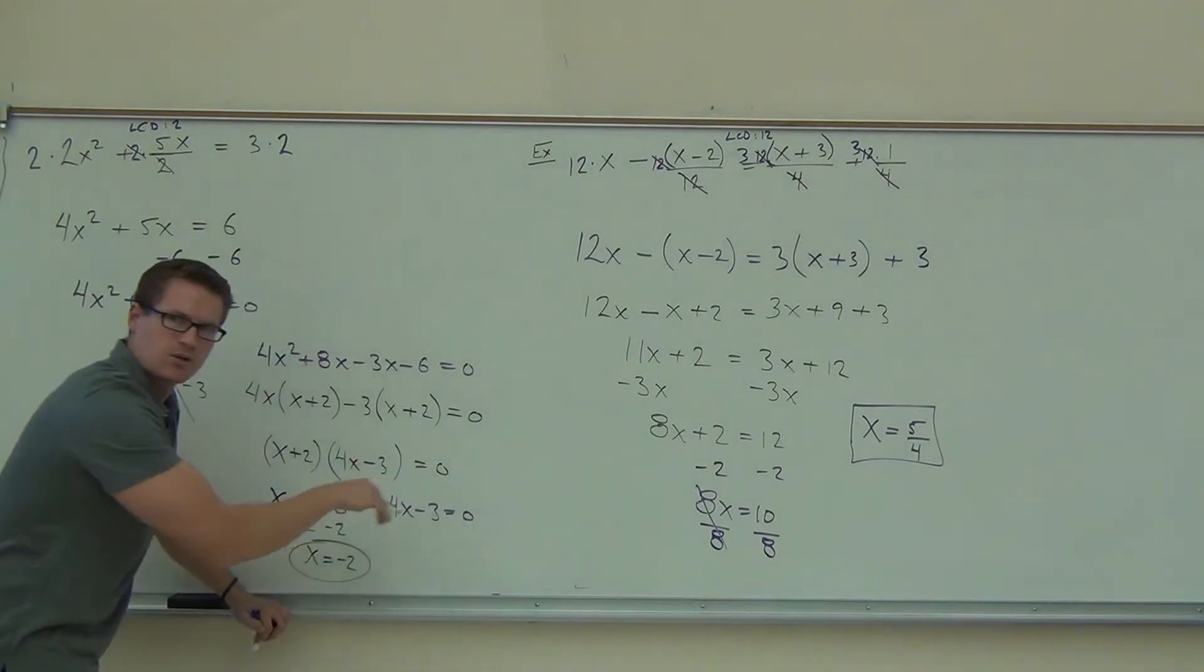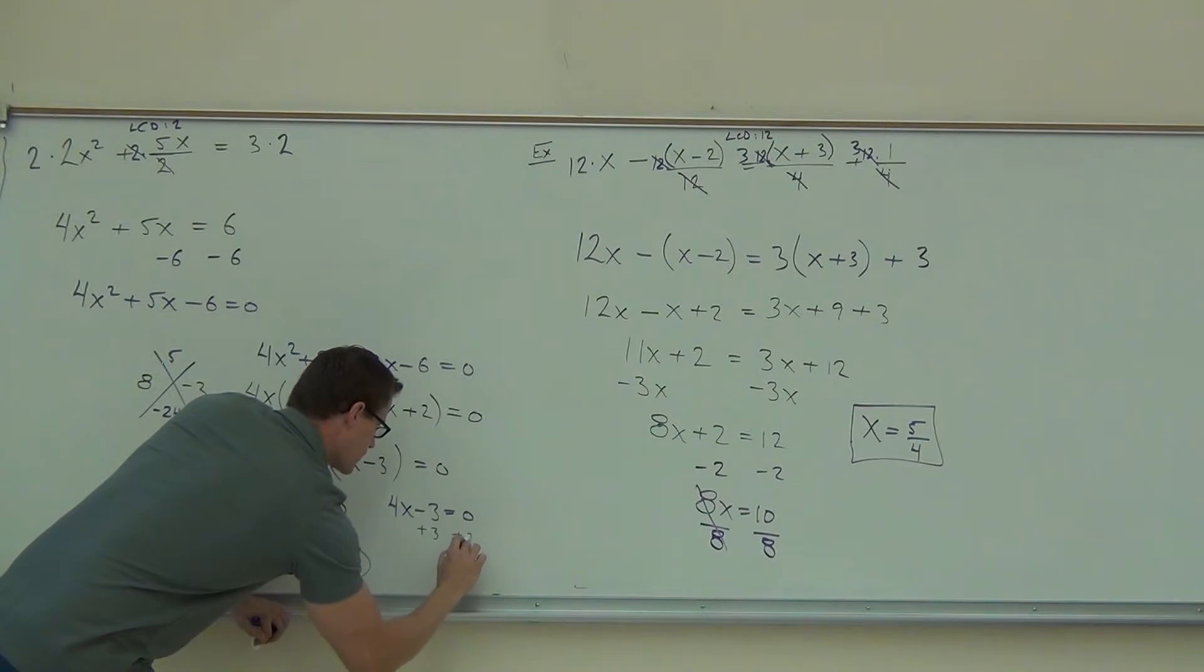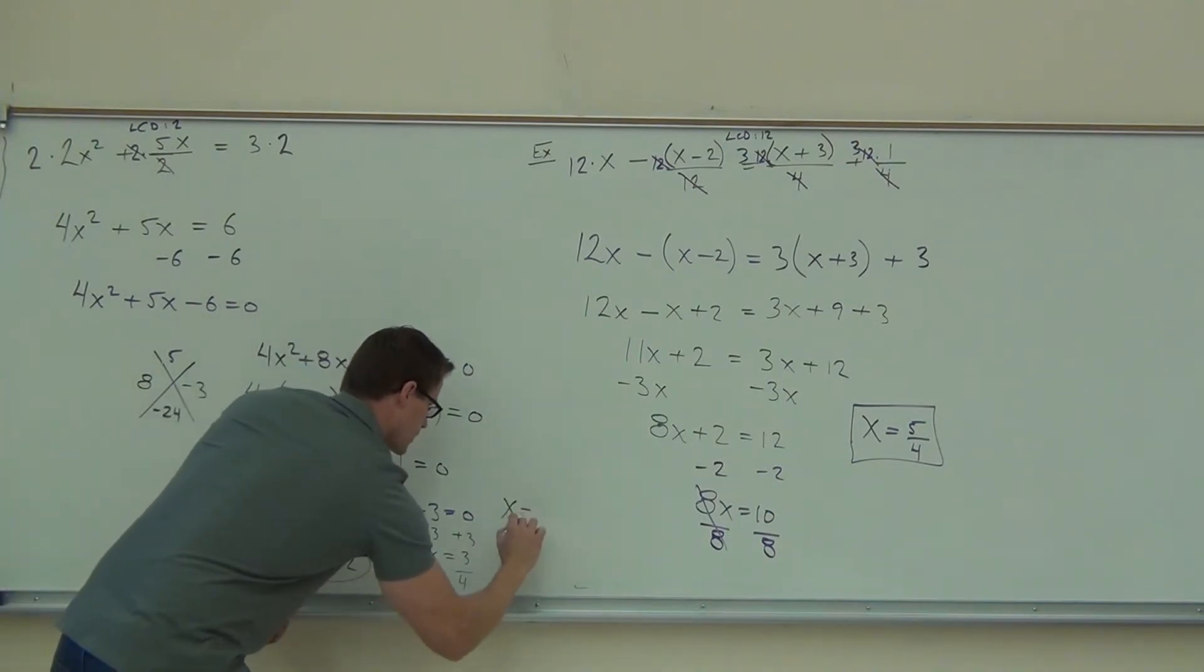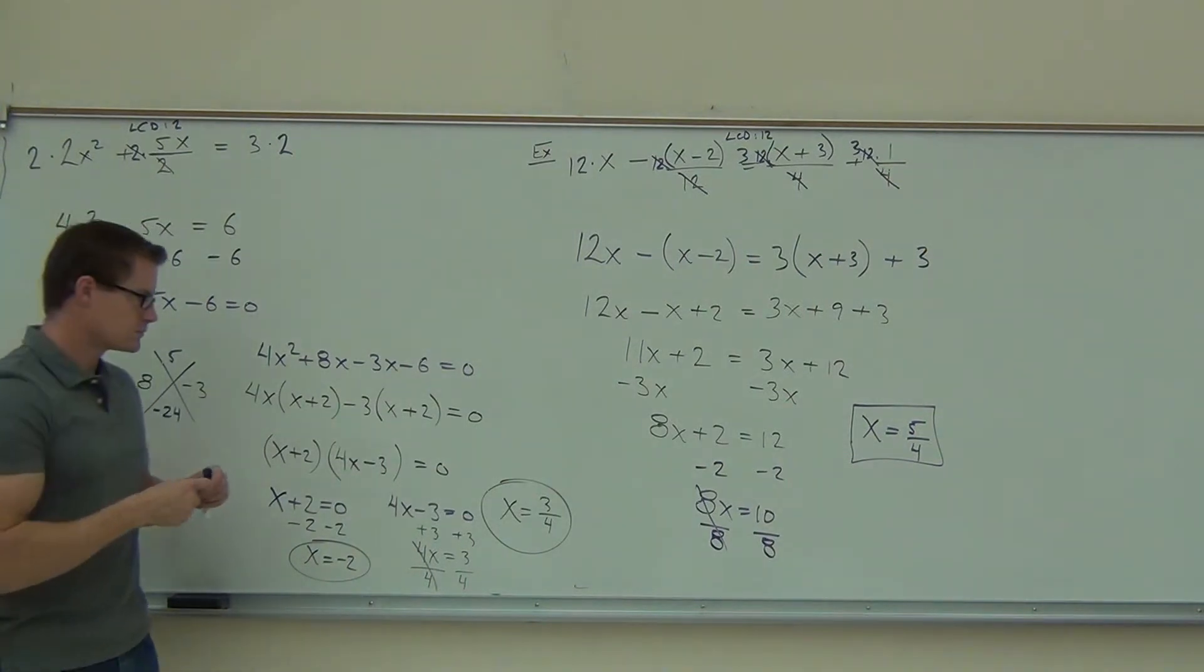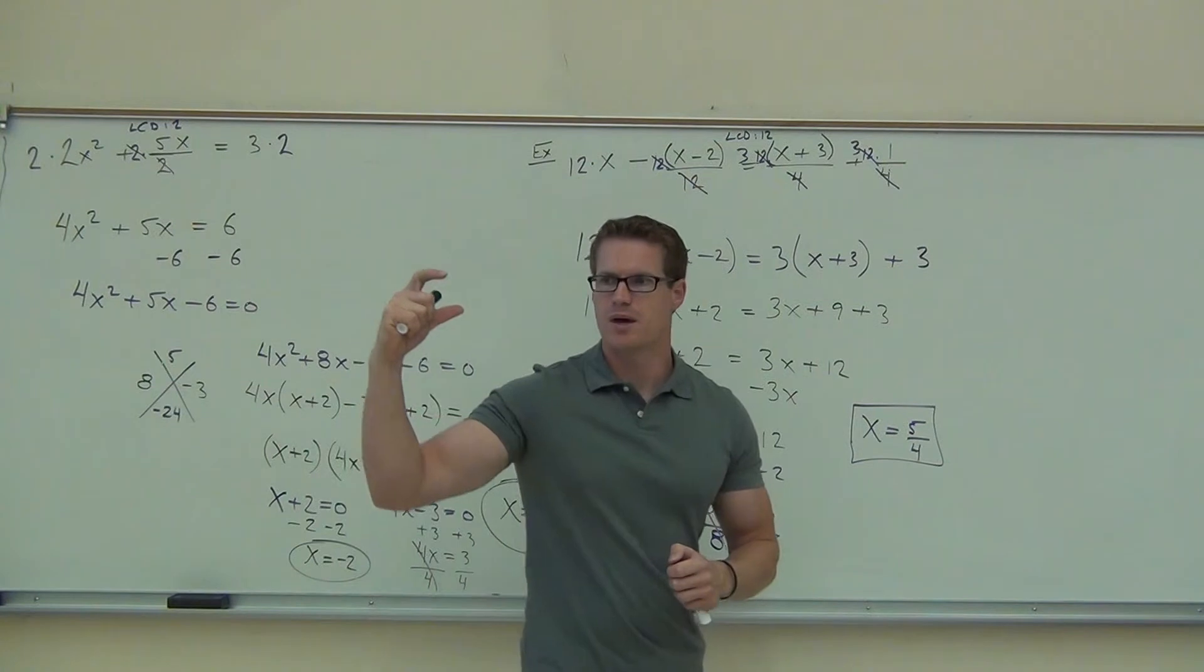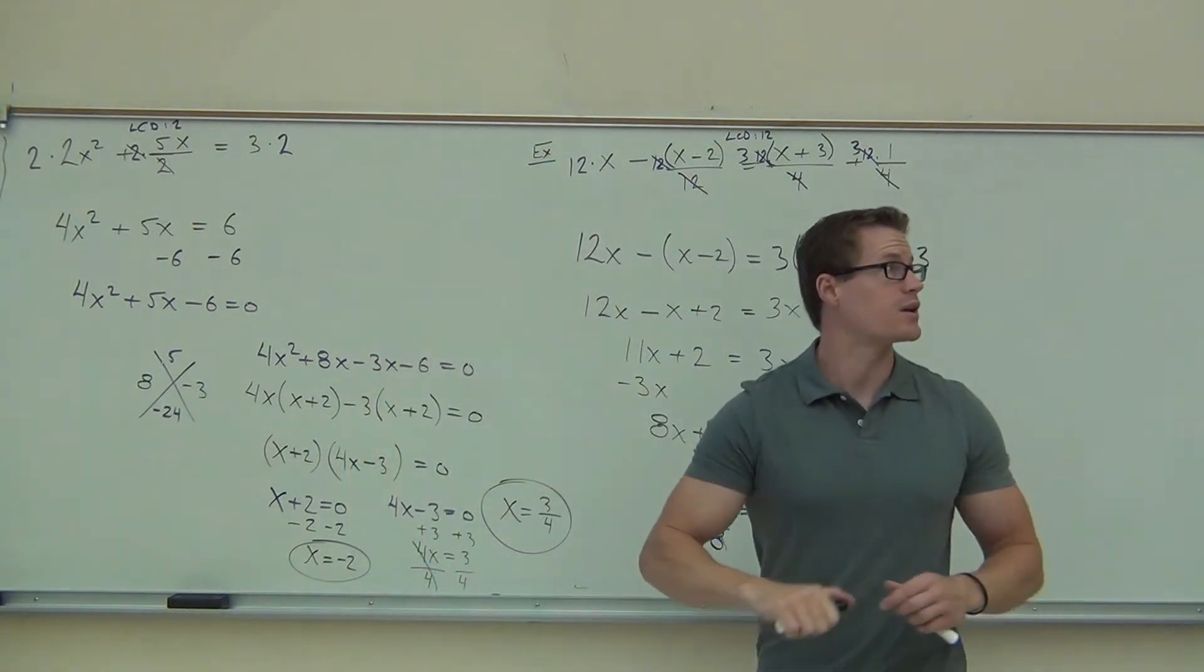And we'll get, what are we going to get to the right-hand side? 3 fourths. Yeah, we'll add that 3. Sorry, it's getting a little cramped. We're going to get x equals 3 fourths. Two solutions, both of them work. And that's because we have the square. That power 2 says you're going to get two solutions out of that.